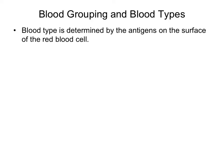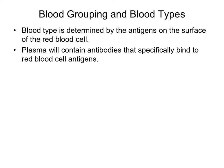Next, we discuss blood groups and blood types. Blood types are determined by the antigens on the surface of the red blood cell. An antigen can be composed of a protein or a carbohydrate, and it serves as a cell marker, or an identification tag. The plasma will contain antibodies, which have receptors that specifically bind to red blood cell antigens.